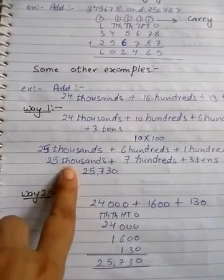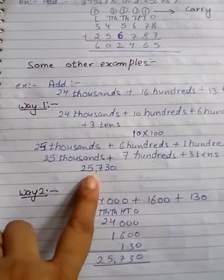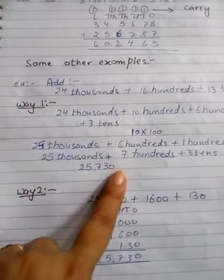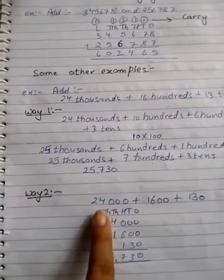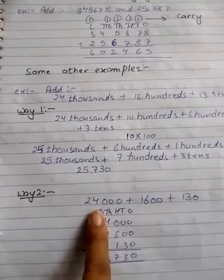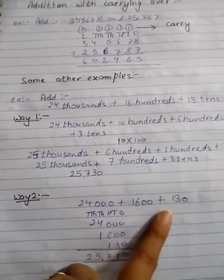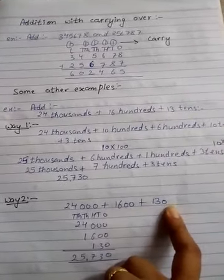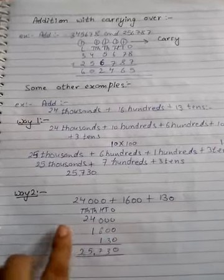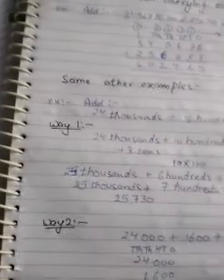Another way is like this: write the numbers in simple numeration form - 24 thousand plus 16 hundred plus 13 tens. Write 130, then write like this.